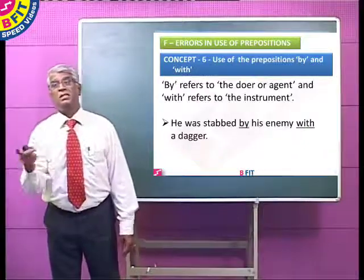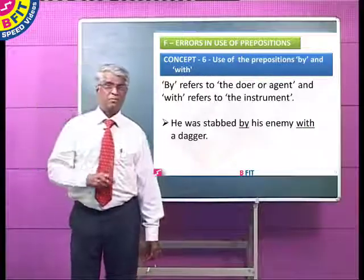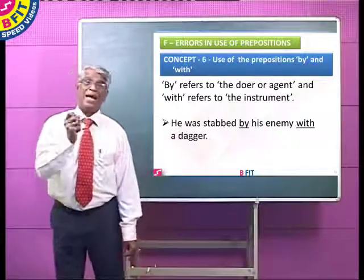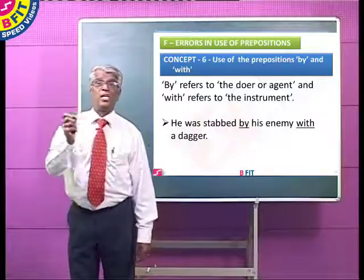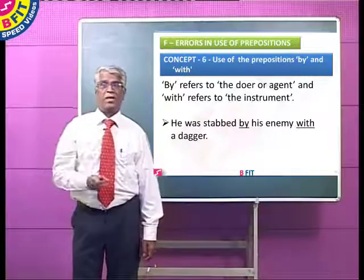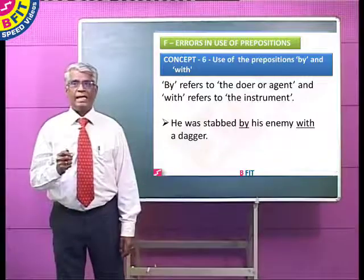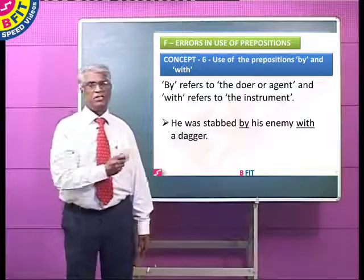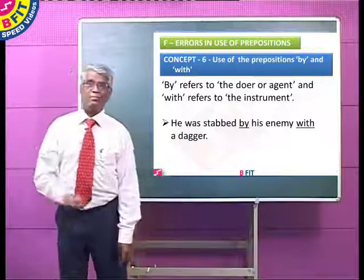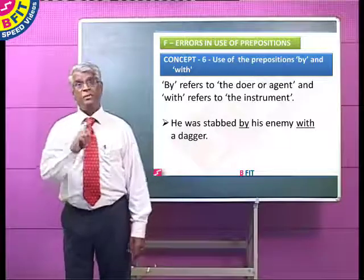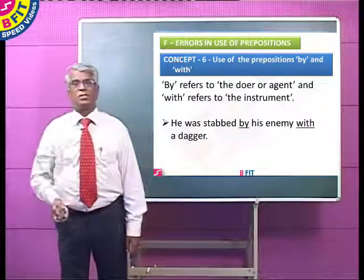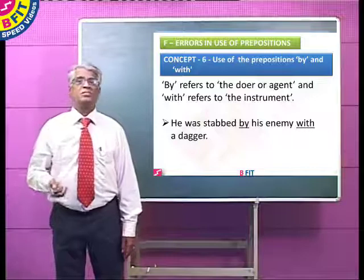Now, the use of 'by' and 'with.' 'By' refers to the doer or agent — the one who acts. 'With' refers to the instrument. For example: he was stabbed by his enemy with a dagger. 'Dagger' is the instrument, therefore we use 'with.' 'Enemy' is the agent, therefore we use 'by.' For the instrument we use 'with' and for the agent we use 'by.'